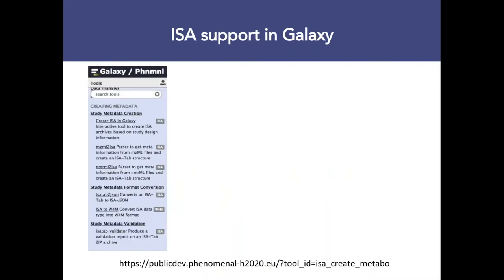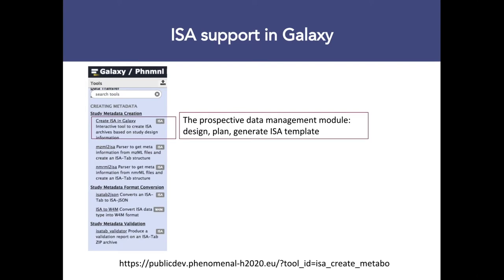Within Galaxy, I'm showing screenshots of the tool. You can go to the public dev server of EBI hosted for the Phenomenal project and use the ISA Create Metabo tool. This shows the support we have for creating an ISA document from within Phenomenal when describing studies. The tool tackles the problem of reporting information in two approaches. Prospectively, if you start a new study, you can use the Create ISA tool in Galaxy to design, plan, and generate ISA templates from the start — even before beginning your study, potentially using PAPI for power analysis.